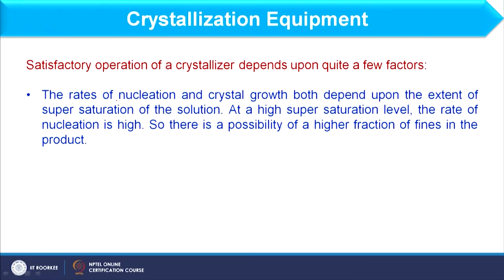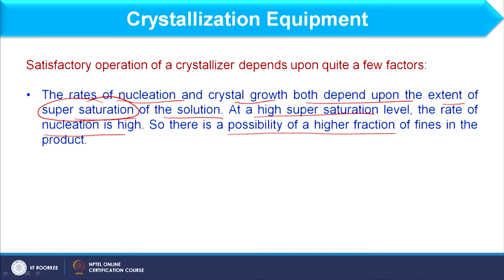As far as satisfactory operation of a crystallizer is concerned, there are different factors on which it depends. The rate of nucleation and crystal growth both depend upon the extent of supersaturation of the solution. At a high supersaturation level, the rate of nucleation is high, so there is a possibility for a higher fraction of fines in the product — small size crystals are more prevalent when supersaturation level is high.